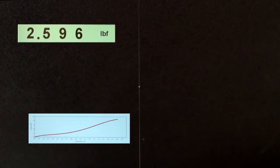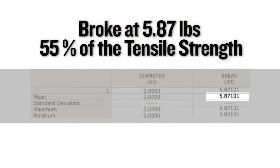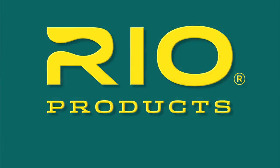In this single knot test, the overhand knot or wind knot broke at 5.87 pounds, which equates to 55 percent of the tensile strength. Rio. Make the connection.